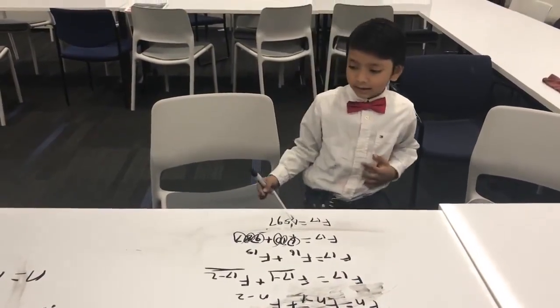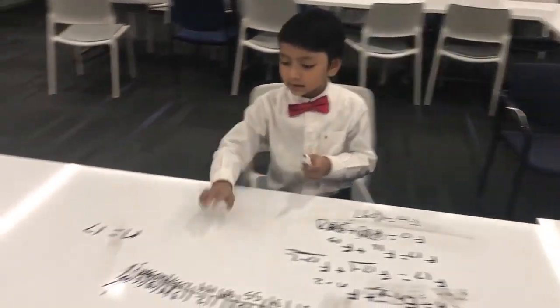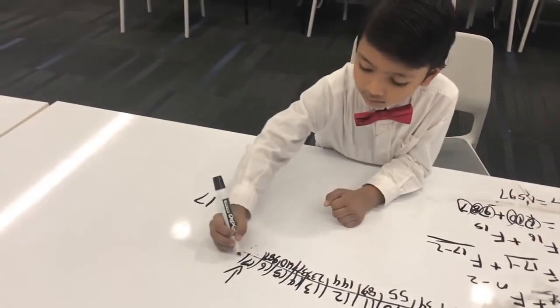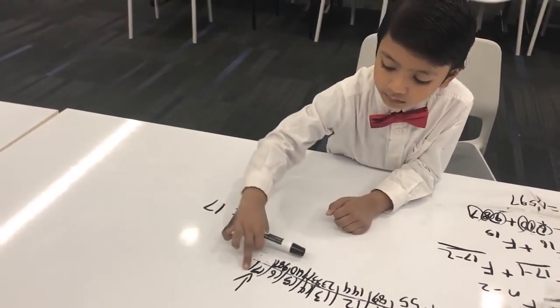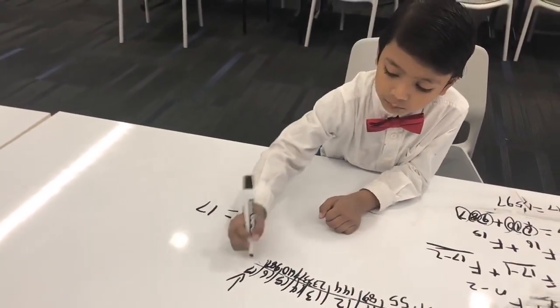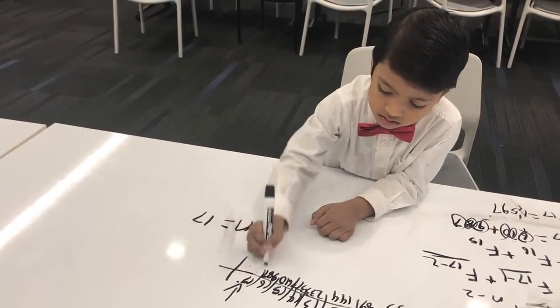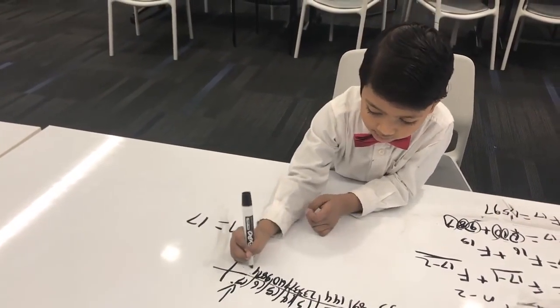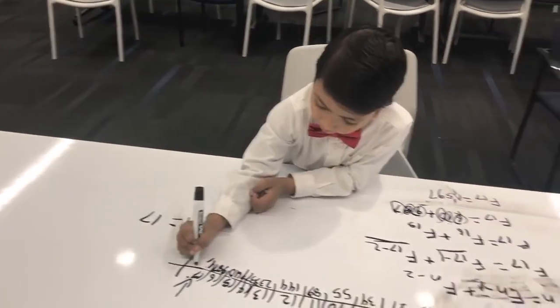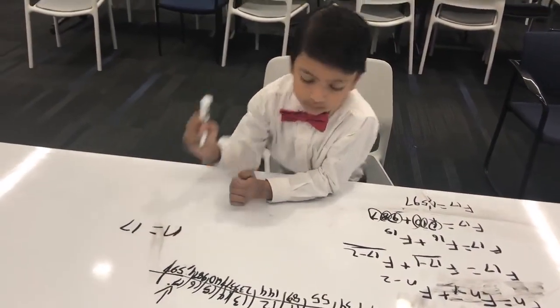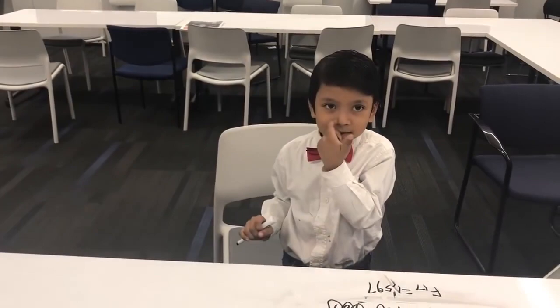So F(17) equals 1,597. I'll probably need some more space for this one — 1,597. Wow, a pretty big number, isn't it?